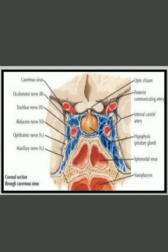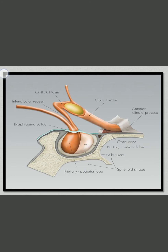This is a coronal section taken from the cavernous sinus. In this figure, you can see the two sphenoid sinuses with the septum separating them, and superiorly you can see the pituitary gland and also the optic chiasma.